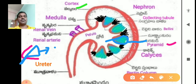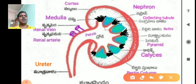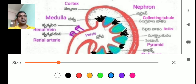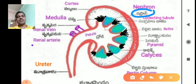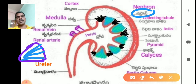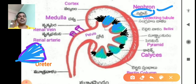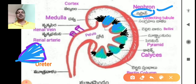The nephrons are the tubule-like structures present within the pyramids. Nephrons are the structural and functional units present in every pyramid. They are very important for filtering blood to form urine.